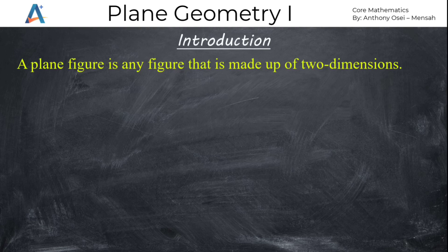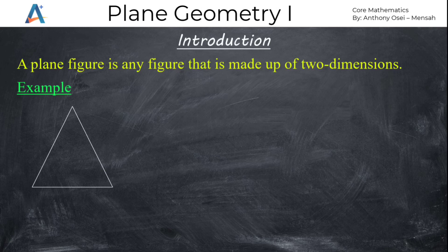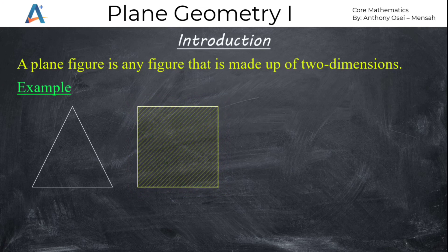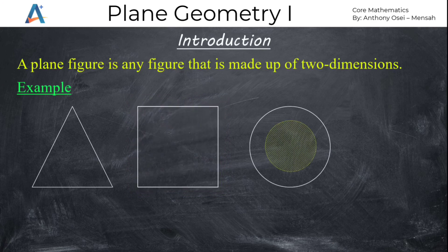We can also describe plane figures as figures that, once you draw them, you'll see only one surface. For example, if I draw a triangle, you will agree that I can see only one surface of the triangle. If I draw a four-sided figure like a square — a quadrilateral, because it's a four-sided figure — you'll see only one face. A quadrilateral is any plane figure that has four sides. If I draw a circle, we'll see only one face. All the diagrams I'm drawing are referred to as plane figures because once they are drawn, only one surface or face can be seen. They are two-dimensional figures.